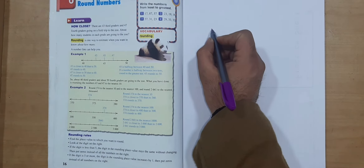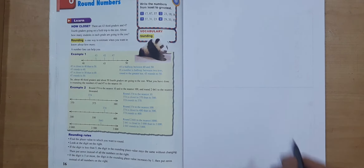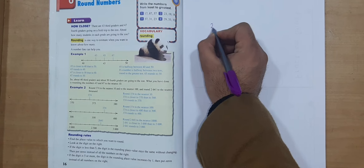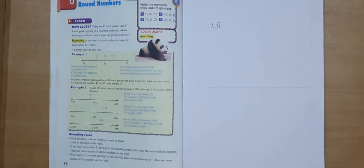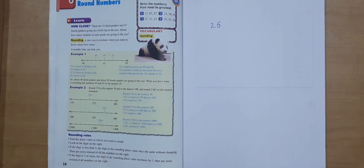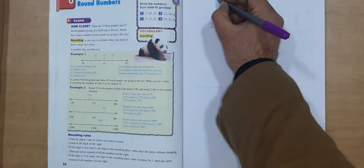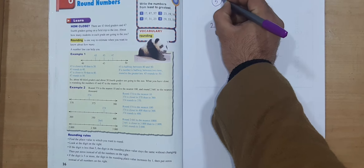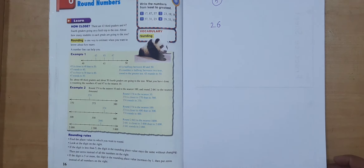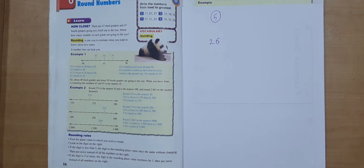If I want to round a number — for example, I have a two-digit number like 26 — and I want to round it up or round it down, number five is the key. Number five is the key to it all. We can round numbers to the nearest ten, to the nearest hundreds, or to the nearest thousands. In this case, we're going to round this number to the nearest ten.